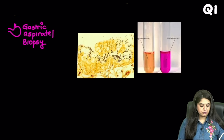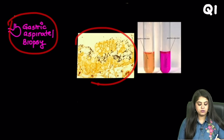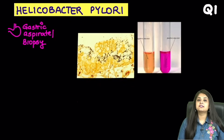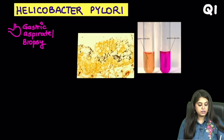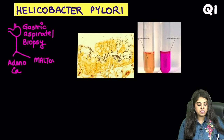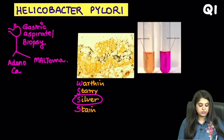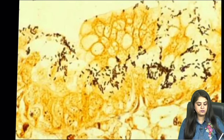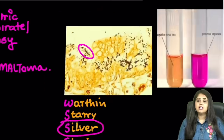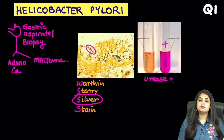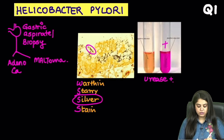The first question: you have a gastric aspirate or biopsy, an image of a stain, and a particular test with pink colour positivity. This is the classical Helicobacter pylori, which affects the stomach and is responsible for two important cancers: adenocarcinoma of the stomach and MALToma, a lymphoma of the stomach. The stain shown is the Wardin-Starry silver stain — silver always gives a black colour, so H. pylori appears black. The pink colour positivity represents the enzyme urease that H. pylori produces, making it a urease-positive organism. Question 1 is done.